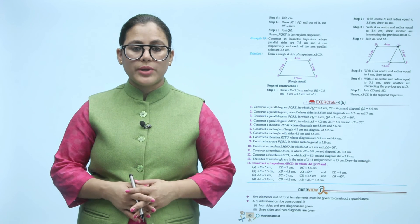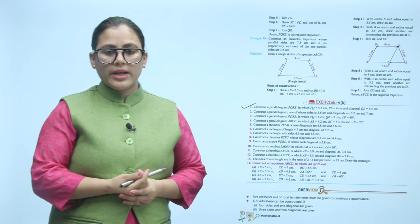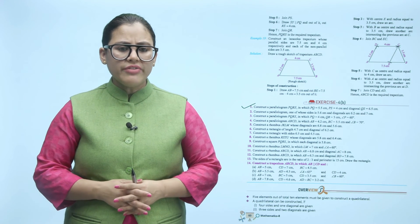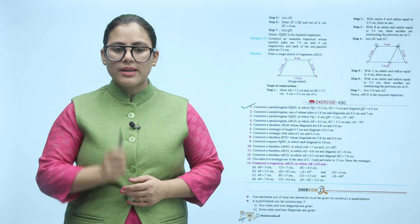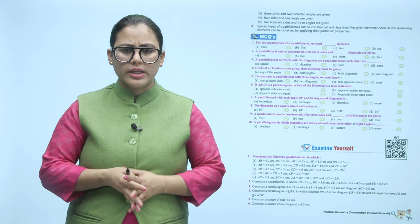Let's look at the exercise. First question: construct parallelogram PQRS in which PQ is 5.5 cm. Use a sharp pointed pencil and scale for these constructions. Overview: five elements out of the total ten elements must be given to construct a quadrilateral. The combinations are: four sides and one diagonal; three sides and two diagonals; three sides and two included angles; four sides and one angle; two adjacent sides and three angles. For special types of quadrilaterals, fewer than five given elements are needed because remaining elements follow from their properties. I hope you have understood this chapter — now practice the constructions on your own.